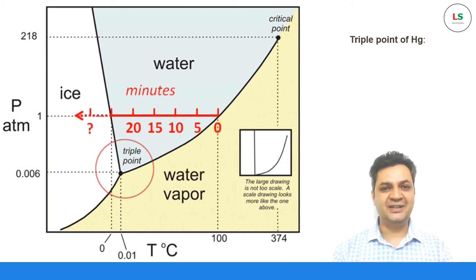For example, the triple point of mercury is -38.83 degrees Celsius and 0.2 millipascals.